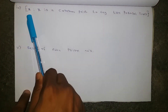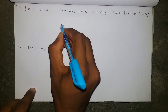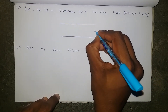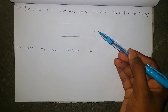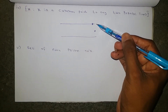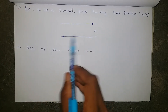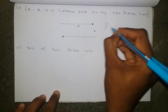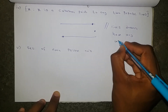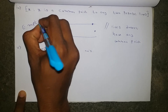Next question: x such that x is a common point to any two parallel lines. If we draw parallel lines, if we keep a point between them, neither line touches it. If we keep a point on the upper line, the lower line doesn't touch it. If we keep a point on the lower line, the upper line doesn't touch it. So parallel lines don't have any common point. That's why this is an empty set.